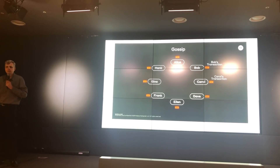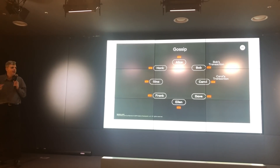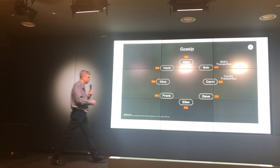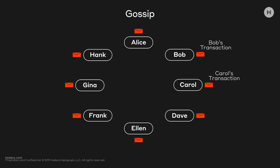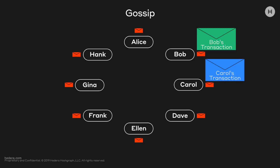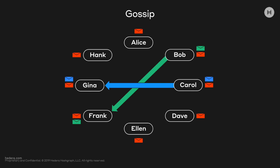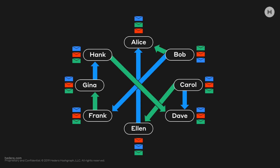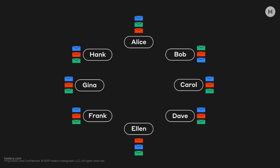Then each of them picks someone at random and sends it to Bob and Gina. Then they pick someone at random and everyone has it. It's exponentially fast — gossip is very fast. If Bob and Carol both have a transaction, we have two transactions that need to go out. They do not take turns; they do not talk to a leader. All they do is gossip at the same time. Both of them send to a random computer, those send to random computers, and so on — 2, 4, 8, 16 — it exponentially goes out until everyone has Bob and Carol's.